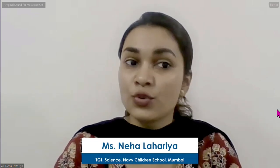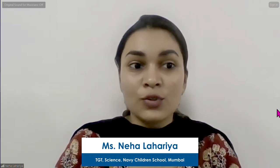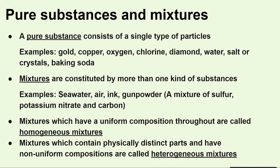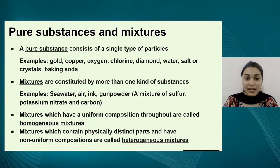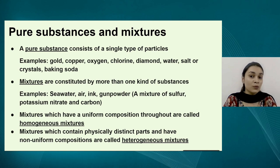Before we dive into this topic, we need to know what are mixtures and what are pure substances, and the difference between the two. A pure substance is basically a substance which consists of a single type of particles throughout — examples include gold, copper, oxygen, chlorine, etc. On the other hand, mixtures are constituted by more than one kind of pure substance. Examples are seawater, air — which is a mixture of gases like nitrogen and oxygen — ink, and gunpowder, which is a mixture of sulfur, potassium nitrate, and carbon.